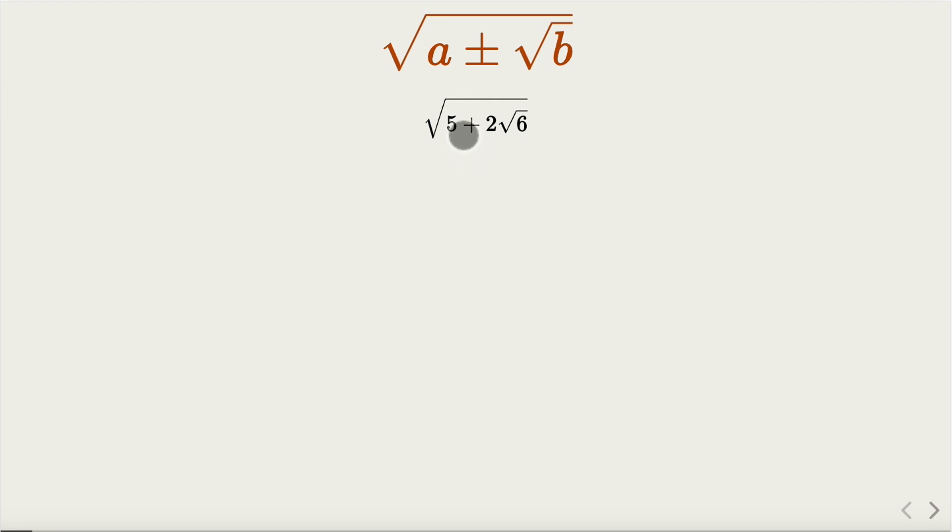For example, in this case, 5 plus 2 square root of 6, you take a square root. How to simplify this? By observing that 5 can be split into 2 plus 3, and 6 is 2 times 3. Break it down to this form. Now this is a square plus 2ab plus b square. We can complete the square, that's the trick. And then the final answer would be simply square root of 2 plus square root of 3.